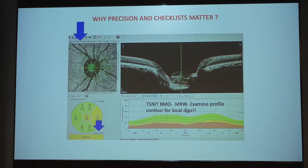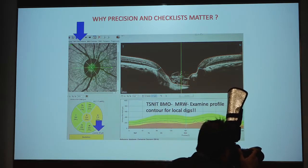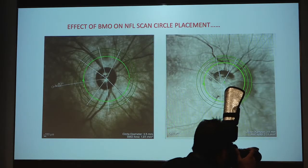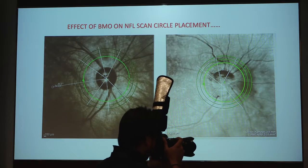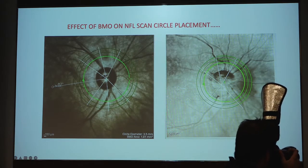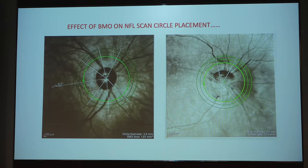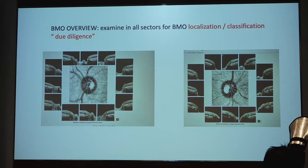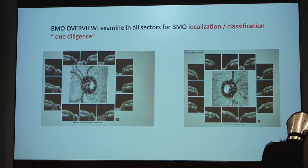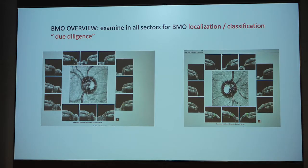The second step is checking the deviation of the Bruch's membrane opening. If that deviation is more than 100 microns, it is not comparable to the normative database, which means the color coding will be unreliable. These are very fine details, and precision matters when using this for serious glaucoma imaging. BMO overview examination in all sectors — localizing it and classifying it — is due diligence without which you should not proceed with the analysis of a particular image. Due diligence is mandatory; otherwise there is no difference between use and abuse.